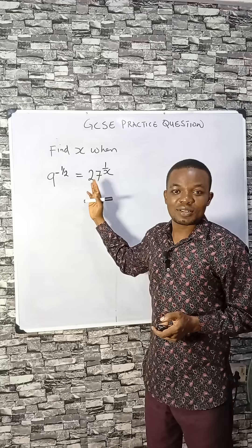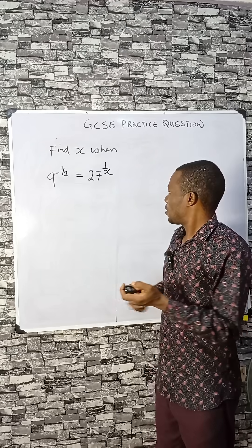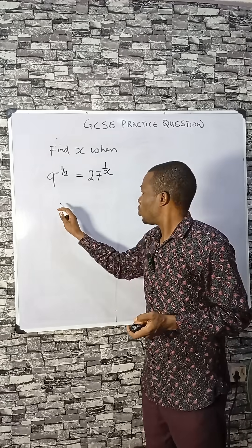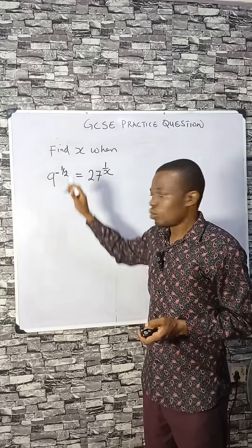This is a GCSE practice question where we need to find the value of x. The first thing you need to do is divide this by 1 so that the negative sign will go.